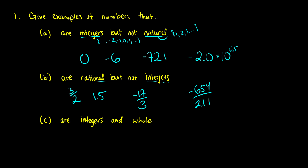For integers that are also whole numbers: whole numbers start at 0, 1, 2, 3, 4, and so on — so we just can't have any negative integers, only positive ones or 0. Examples include 0, 16, 27, or 891 — as long as there's no decimal point and it's not negative. These kinds of questions tend to appear on assignments rather than exams.